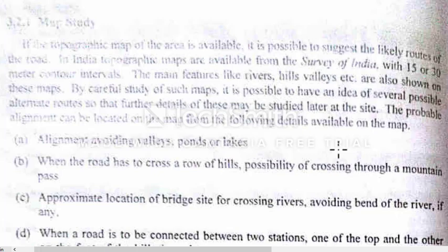By careful study of such maps, it is possible to have an idea of several possible alternate routes, so that further details of these may be studied later at the site. The probable alignment can be located on the map from the following details available on the map.